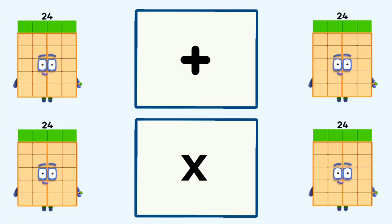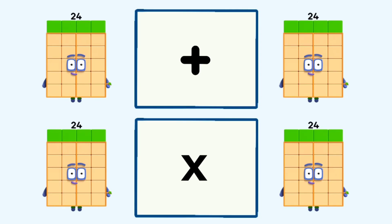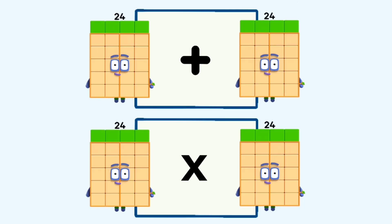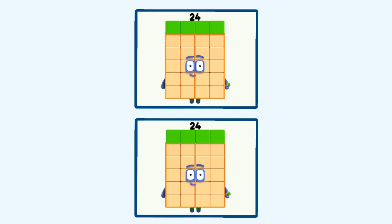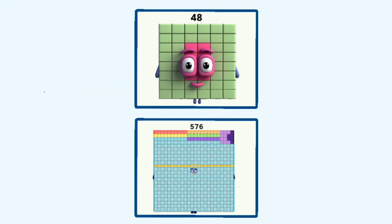24 plus 24 and 24 times 24 equals 48 and 576.